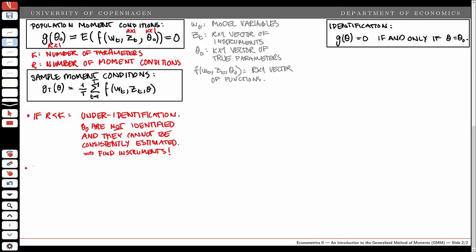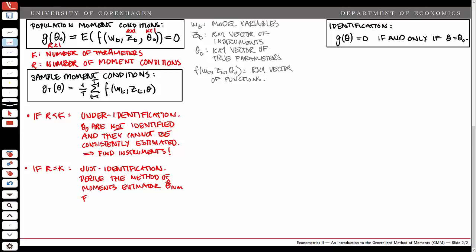In the second case, if r is equal to k, we have just-identification. In that case, we can derive the method of moments estimator theta hat MM by solving the sample moment conditions evaluated at the estimator set equal to zero. For example, with two moment conditions and two unknown parameters, we simply set the sample moment conditions equal to zero and solve to find theta hat.